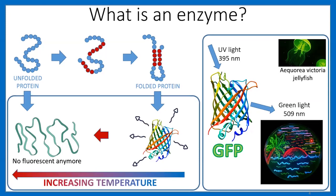If we increase the temperature of the solution where the GFP is, now we can see that the GFP is essentially a free chain of amino acids in solution — there is no more structure on this product, and so the solution is no longer fluorescent. So, what is an enzyme? An enzyme is a protein — that's it — and it is a bio-machine.